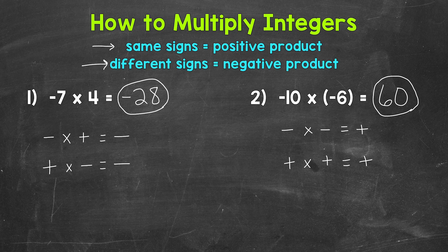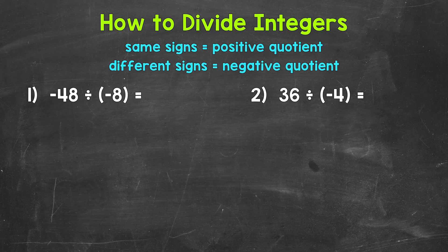That's how we multiply integers. Let's move on to division. Our rules are the same for dividing integers as they were for multiplying integers — working with those positives and negatives, same signs or different signs.